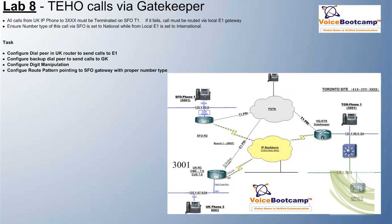In lab number 8, I'll show you how to configure TAHO calls via the gatekeeper, where the UK IP phone dials 3XXX and the call must terminate on the T1 of SFO as opposed to the IP phone in Toronto. And if it fails, it should use the local E1 gateway.